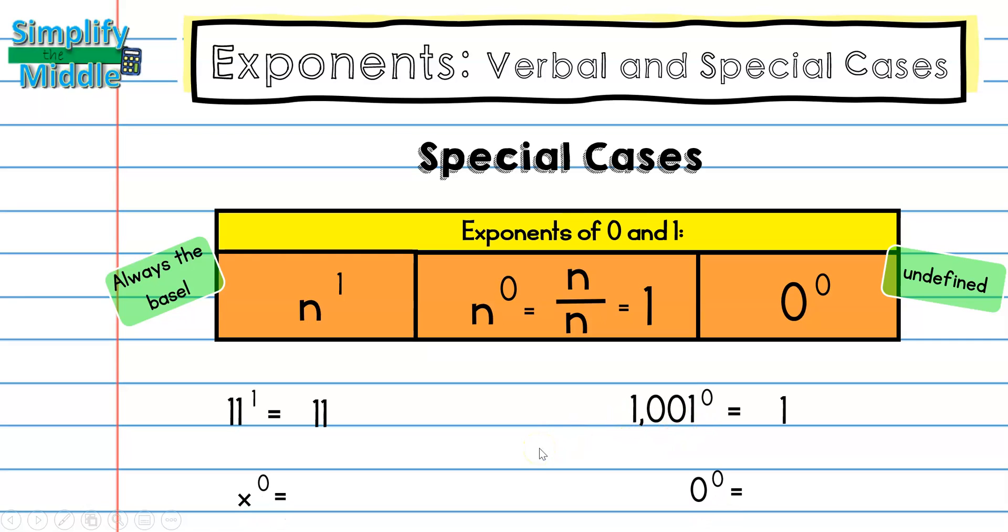Two more examples below. So, x to the zero power really means x divided by x, which is 1. And zero to the zero power we just mentioned is undefined because zero divided by itself is not allowed. We cannot divide by zero.